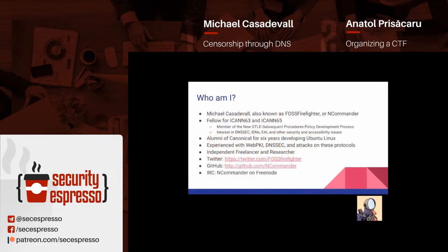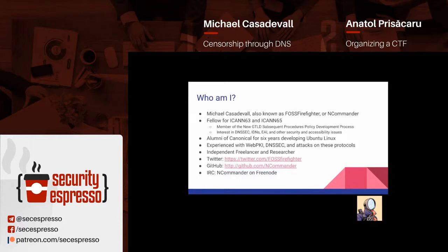Who am I? I am Michael Casadovall, also known as FOSS firefighter or end commander. I've been a fellow for ICANN at ICANN 63 and ICANN 65. I'm a member of the new gTLD subsequent policies procedure, and I have an interest in DNSSEC, internationalized domain names, email addresses, internet nationalization, and other security issues. I was an alumni of Canonical for six years developing Ubuntu Linux, and I've done extensive work with WebPKI — SSL certificates and TLS — DNSSEC, and attacks on those protocols. I work as an independent freelancer and researcher.